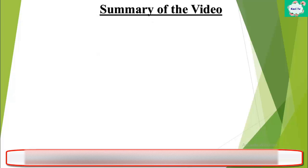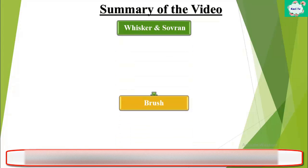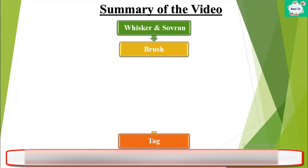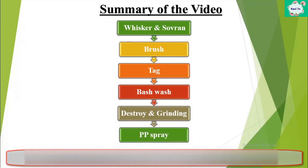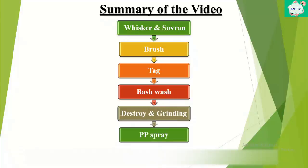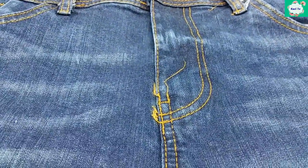Let's review the video. At first we did whisker and chevron. Then we did scraping. Then peg. Then base wash. After that we did destroy and grinding. Then we did PP spray. Finally we neutralized the sample. This is our final sample.